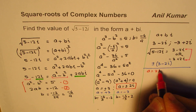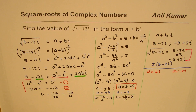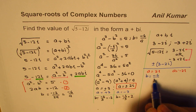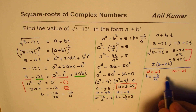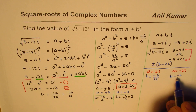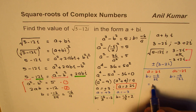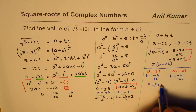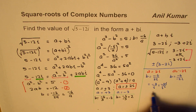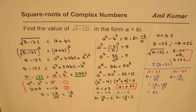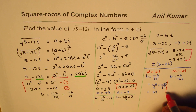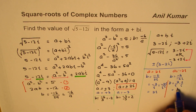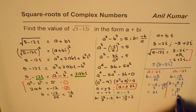If a equals 2i, b equals minus 6 divided by 2i, which is minus 3 over i. Multiplying numerator and denominator by i, we get minus 3i over i squared, which equals 3i. And if a equals minus 2i, b equals minus 6 divided by minus 2i, which is plus 3 over i, giving us 3i over i squared, which equals minus 3i.